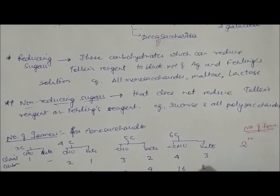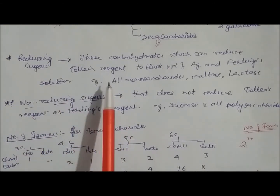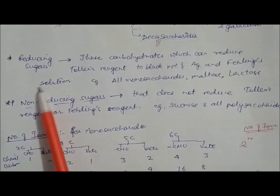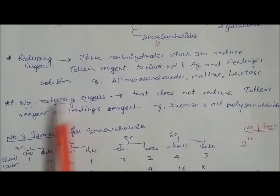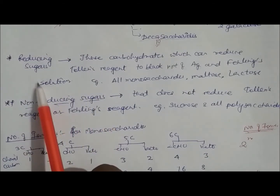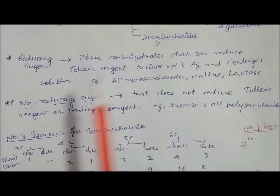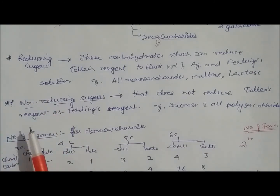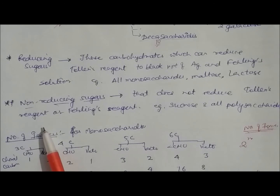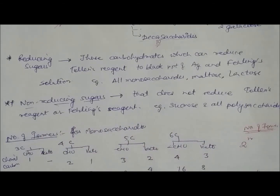Reducing sugars can reduce Tollens' reagent to give a black precipitate of silver, and also reduce Fehling's solution. Reducing sugars include all monosaccharides, maltose, and lactose. Non-reducing sugars do not reduce Tollens' reagent or Fehling's solution — examples are sucrose and all polysaccharides.